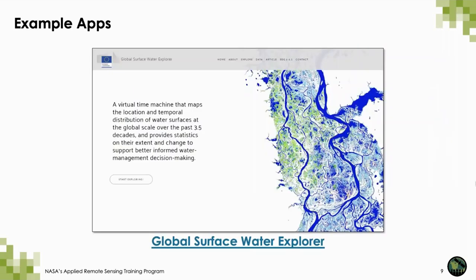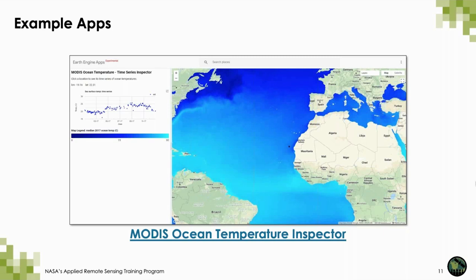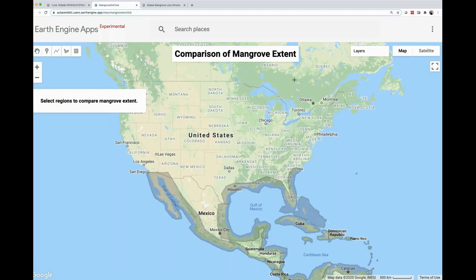There are some really great examples of other studies that have used Earth Engine to create interactive apps. For example, Global Surface Water has an Explorer tool to look at water surfaces over the globe over the past three and a half decades. There's also Global Forest Watch through Hansen et al. that makes forest loss and gain data readily available at a global scale. Earth Engine also has a MODIS Ocean Temperature Explorer app that allows the user to click anywhere on the globe and see a time series of ocean temperatures over time.